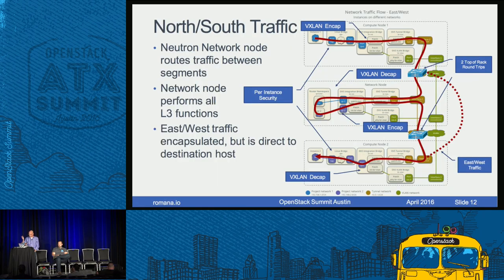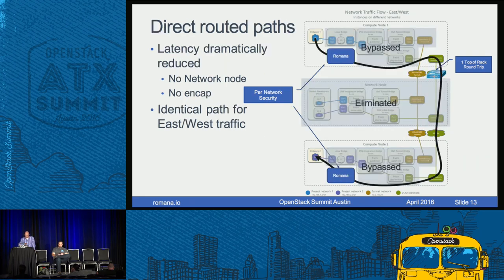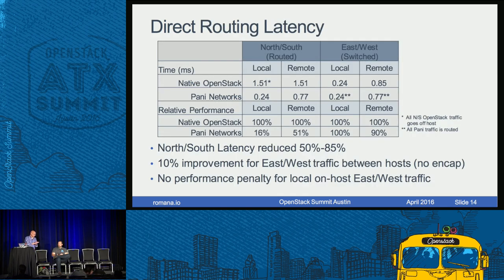You probably know the crazy packet trombone path through a virtual router in OpenStack — encapsulated and de-encapsulated, routing back and forth across the data center. All that goes away because while it's not a DVR, it acts just like one since you're routing directly to the known destination. You might have routers in your data center, but this bypasses all that additional packet processing, resulting in an incredible improvement in latency.